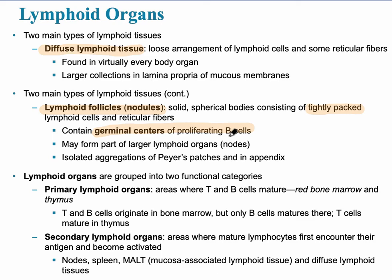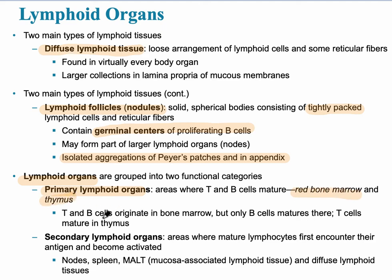These follicles can be located in various areas of the body, but there are isolated aggregations — large amounts of follicles — in the Peyer's patches, which are in the small intestines, and also in the appendix. In addition to this tissue, there are also lymphoid organs. The primary lymphoid organs are the red bone marrow and the thymus, where these cells originate. The secondary lymphoid organs are the areas those cells go to once they are mature.